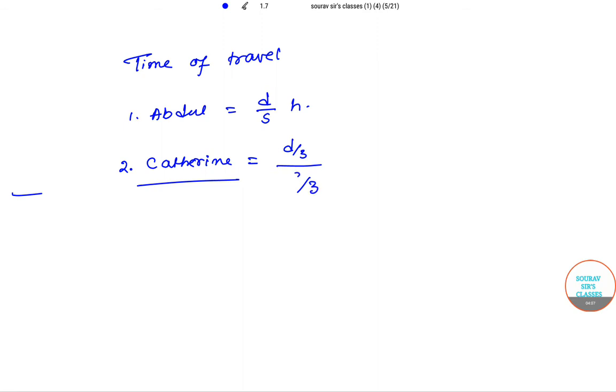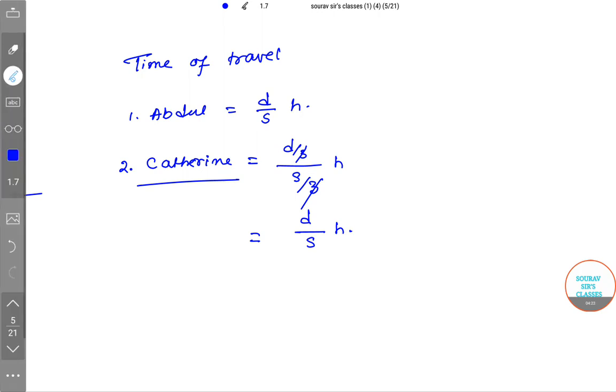So if we just simplify, then we will get d/s hours, right? This 3 and 3 will be eliminated. So here we have Abdul and Catherine's time of travel.